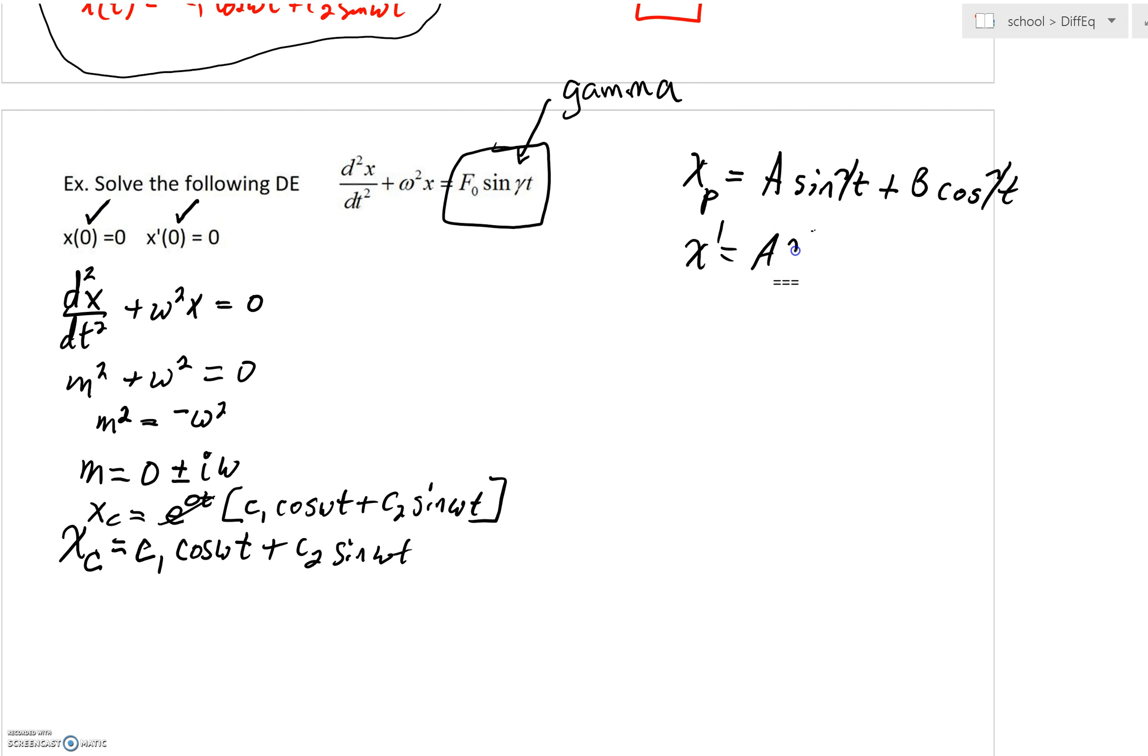Aγcos(γt) plus, well, the derivative of cosine is negative sine. But again, we're going to use the chain rule, and a gamma is going to come out as a result.